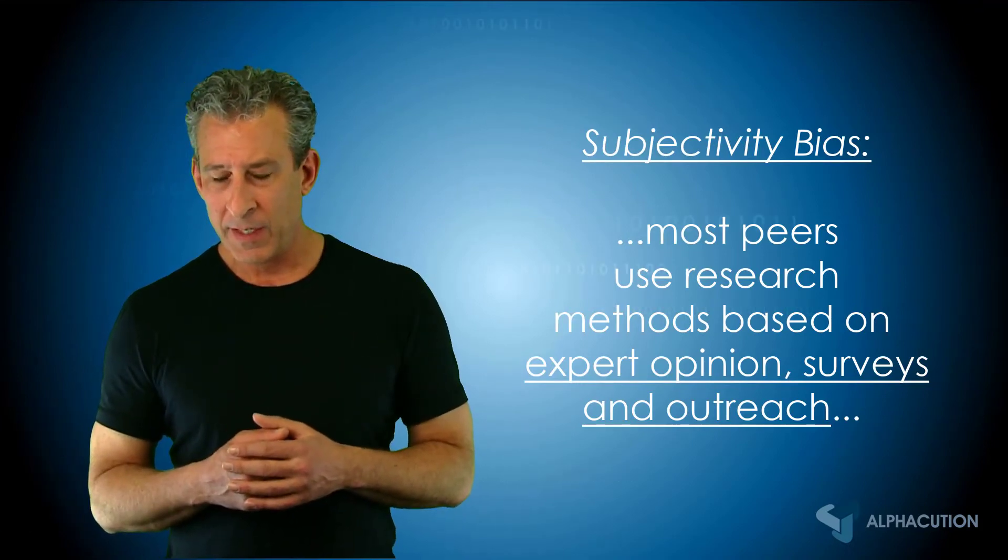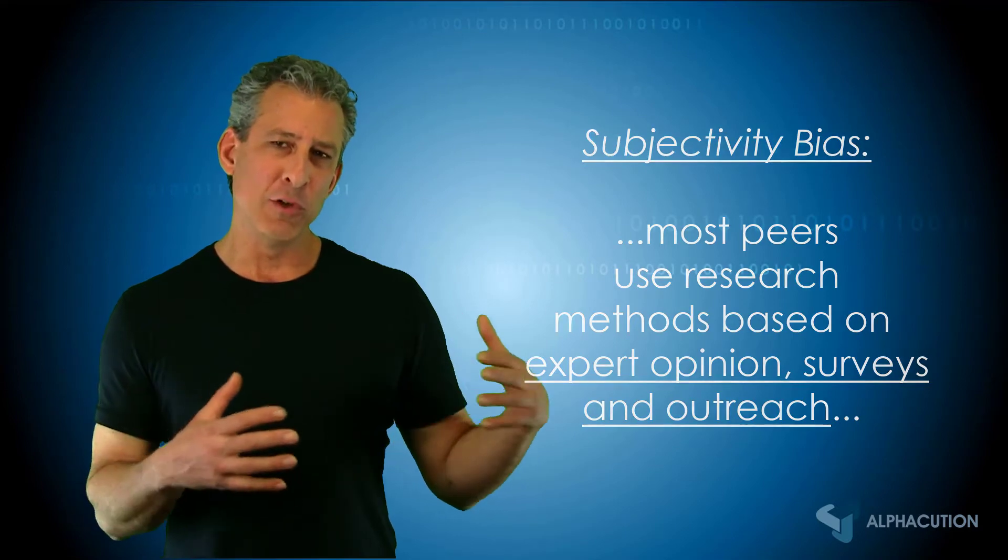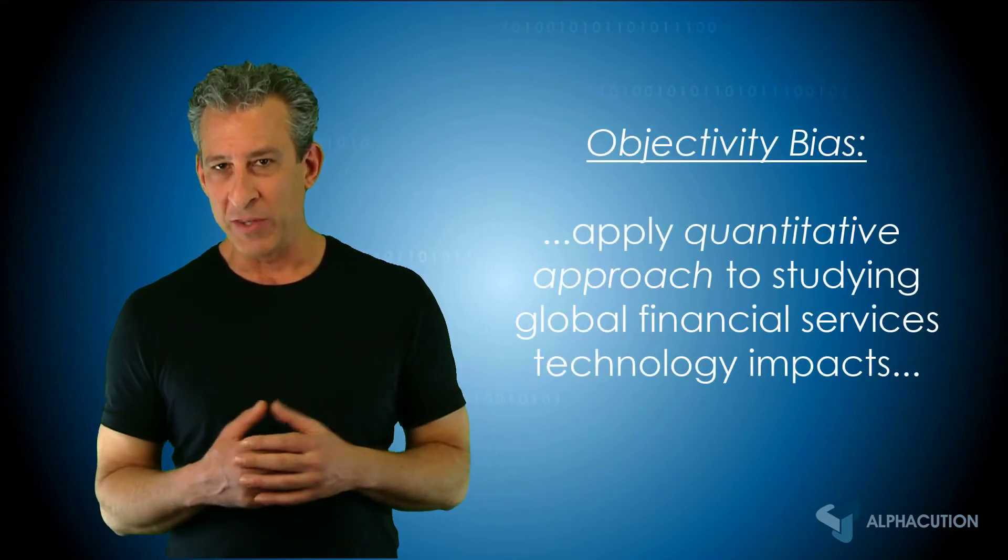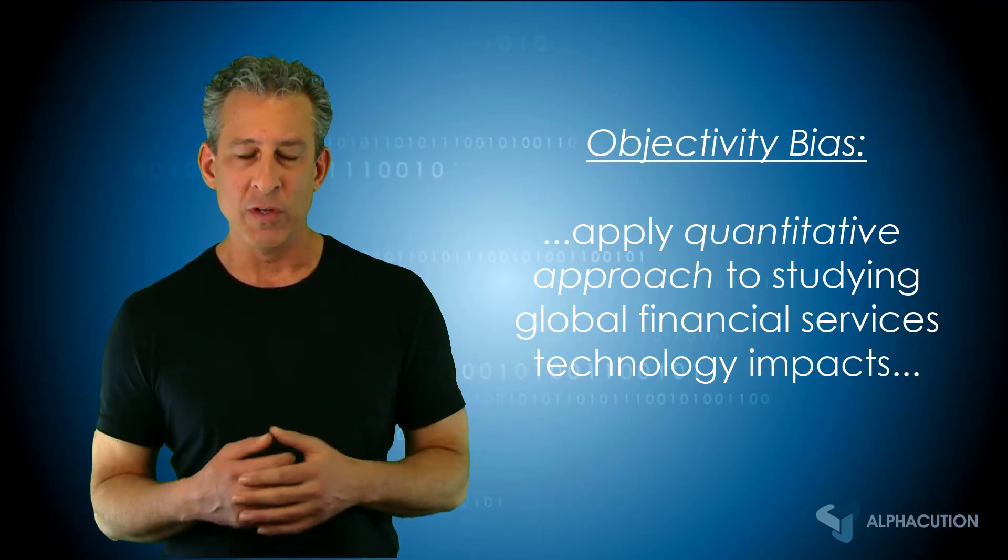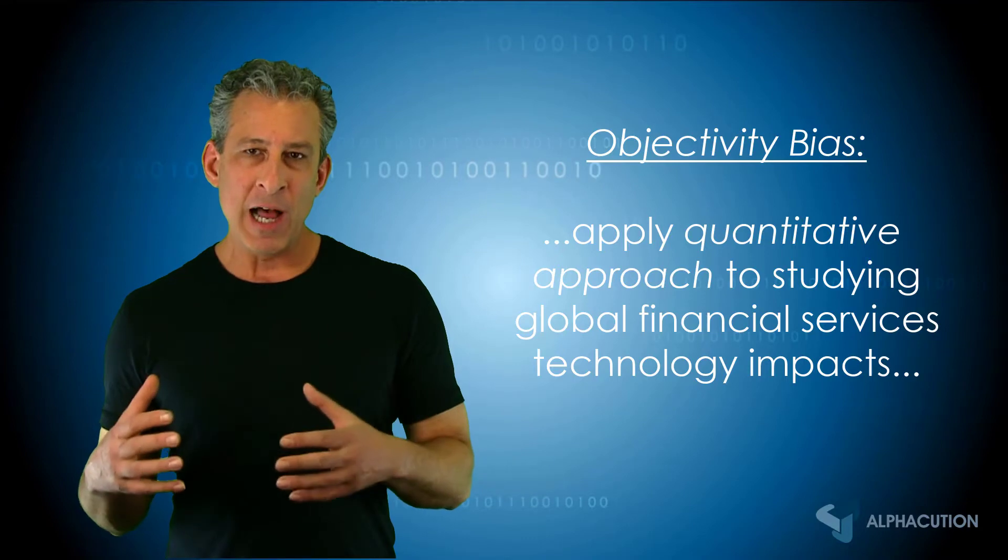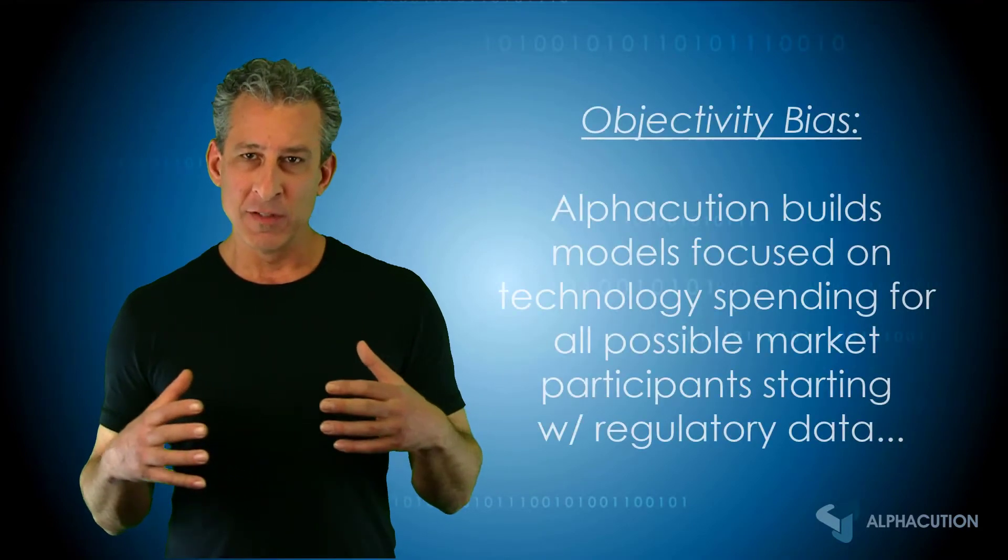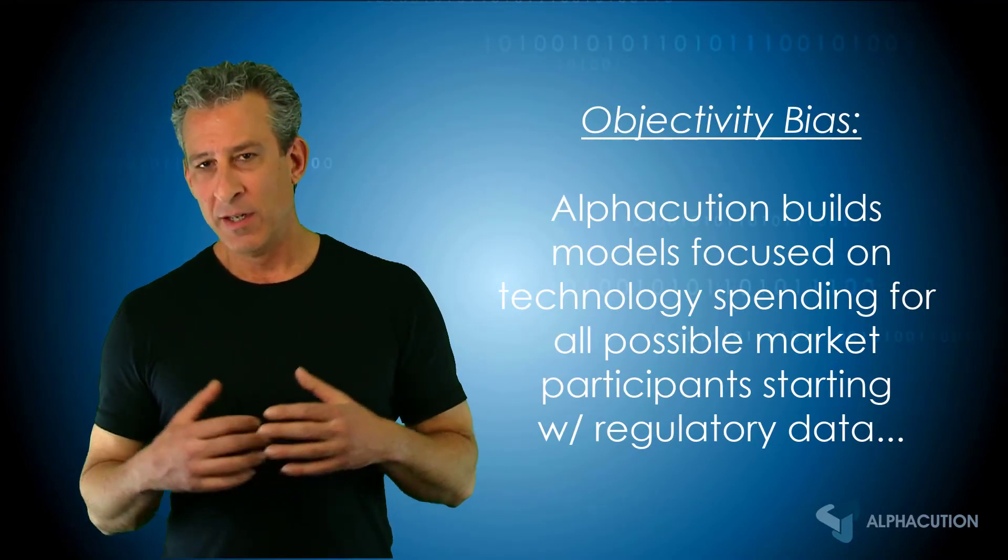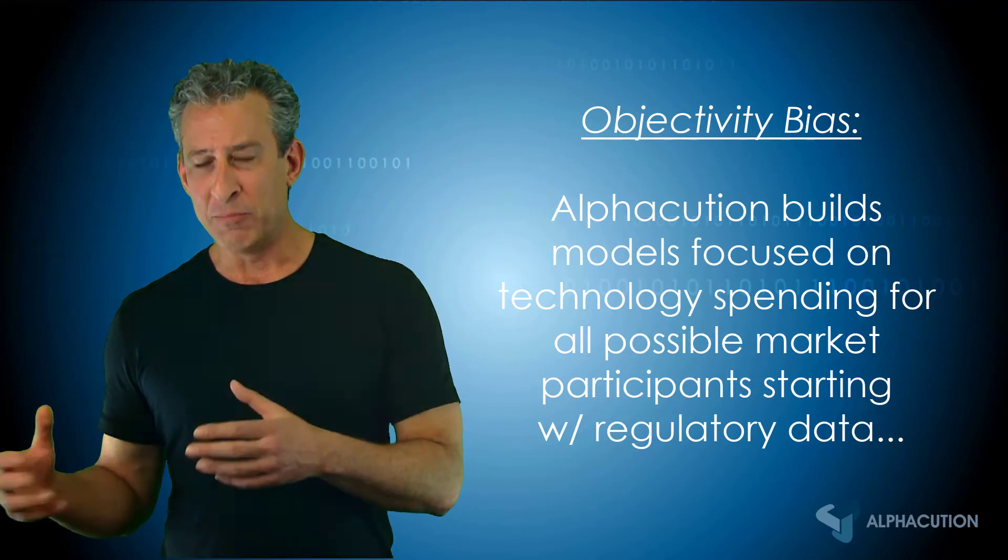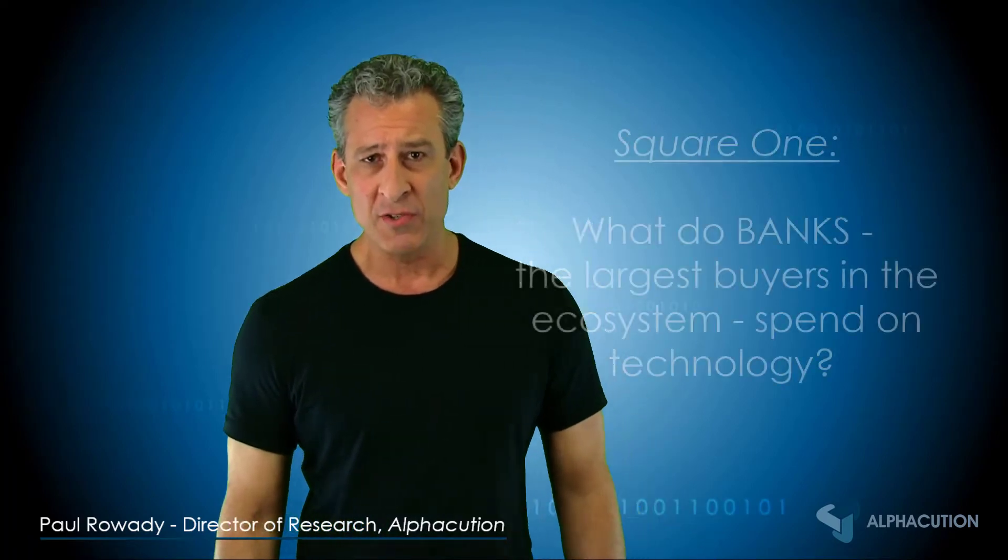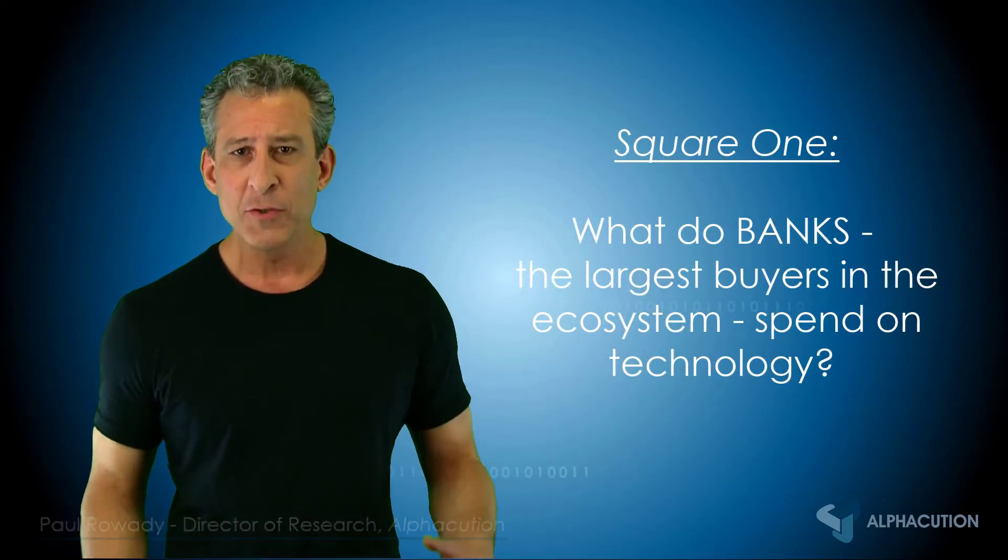So the question is: what if we tried to look at this industry and the segments within it—asset management, banking, trading, and so forth—and apply a more quantitative research methodology biased towards objectivity? This approach starts with one very simple question: what do banks spend on technology?